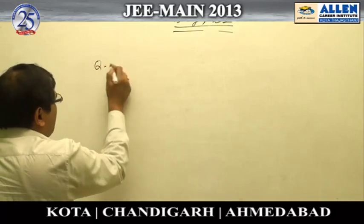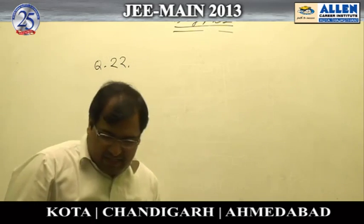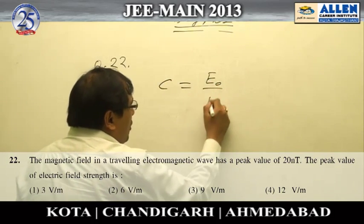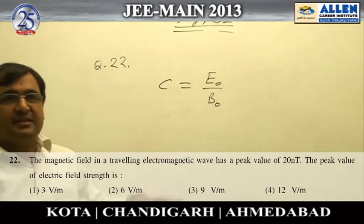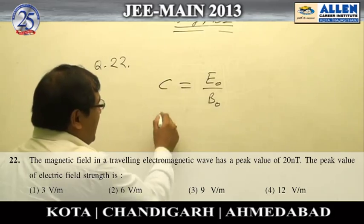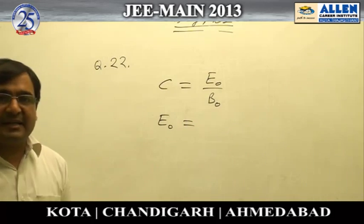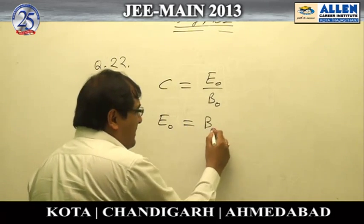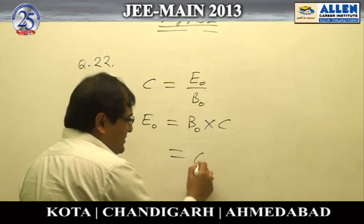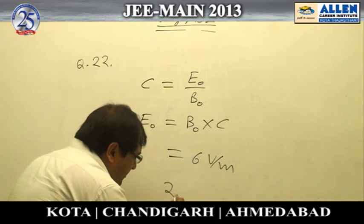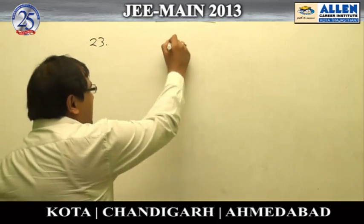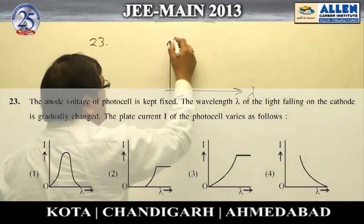Question number 22 is directly based on the simple formula that the ratio of electric field to magnetic field in an electromagnetic wave equals the velocity of light. We can find the electric field by multiplying the magnetic field with the velocity of light, giving 6 volts per meter, which is option number 2.